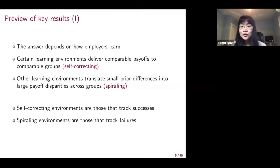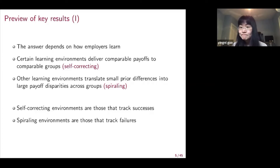In this paper, we show that the answers to the previous questions depend crucially on how employers learn about workers' productivity. Certain employer learning environments deliver comparable payoffs to comparable social groups — we call such learning environments self-correcting ones. Other learning environments translate a small prior difference into large payoff disparities across different social groups — we call such learning environments spiraling ones. Without giving too much detail at this preview stage, we can think about self-correcting environments as those that track successes, and spiraling environments as those that track failures.